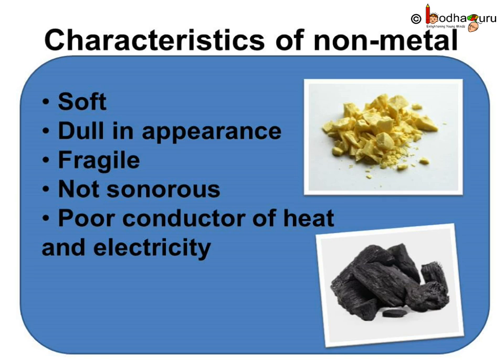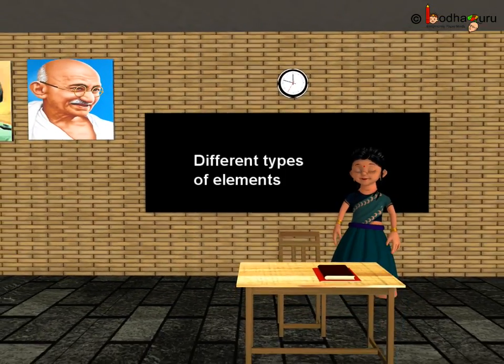Non-metals like coal, sulfur, etc. are softer and dull in appearance. They do not turn into a flat sheet if we hit them hard — instead, they just break or turn into powder, as they are fragile. They are not sonorous and are poor conductors of heat and electricity. So now you know how to identify and distinguish metals and non-metals based on their physical properties. That's all for now — bye bye, children!